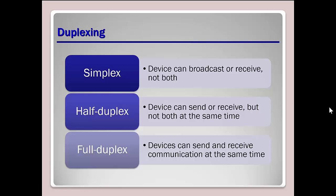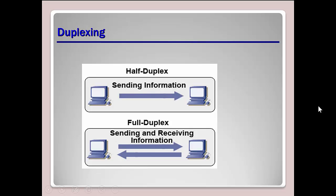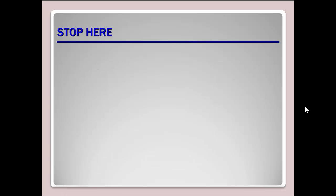Here's a graphical example: in half duplex, one computer sends information and the other waits until it's all sent before responding. The reason we have full duplex now is because of collision detection, which we'll talk about more later. That's enough for part one — we'll discuss part two of module two in the next video.